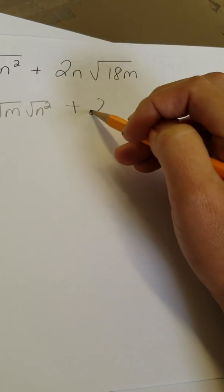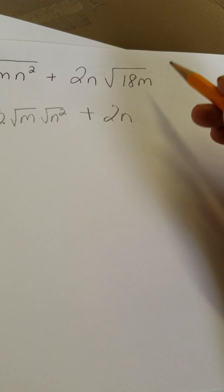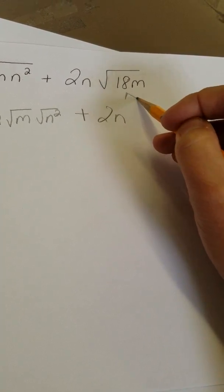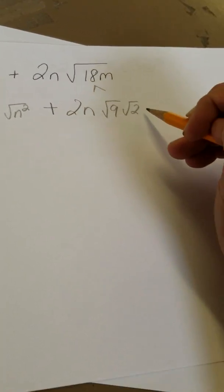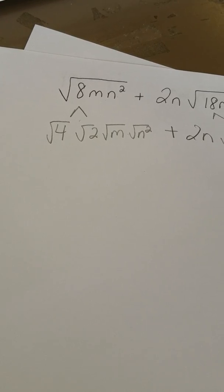Plus 2N, coming down, coefficient, breaking down the 18. 18 breaks down to 9 times 2, and radical M is still inside. Let's leave him be for a minute. Okay, let's see what we got here.